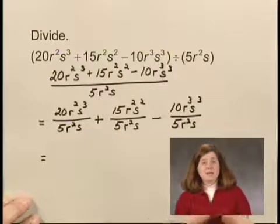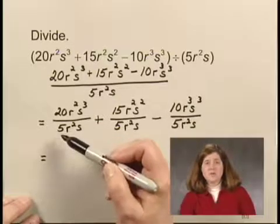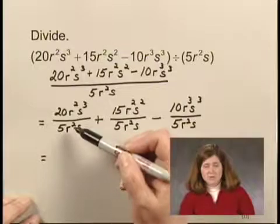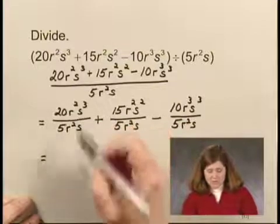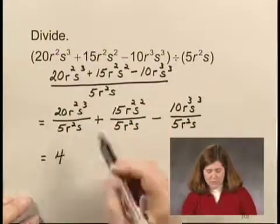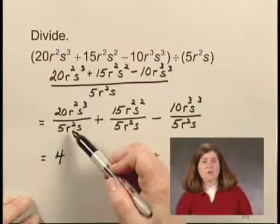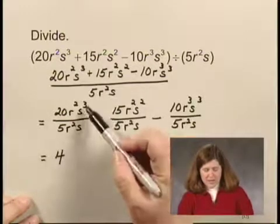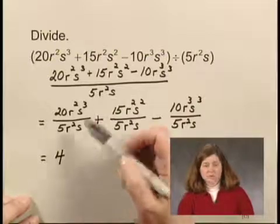And now I simplify by dividing the coefficients and subtracting exponents. 20 over 5 is 4. r squared over r squared is going to be 1. s cubed over s will be s squared.